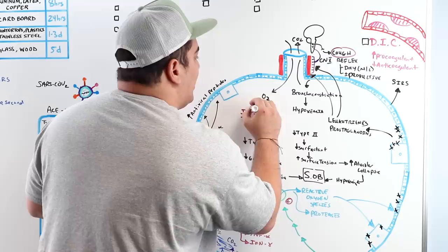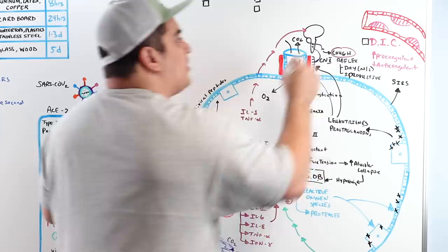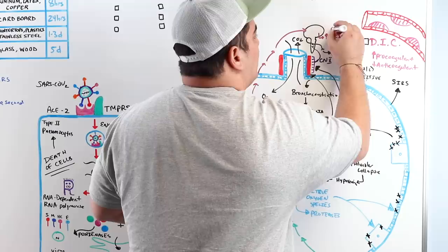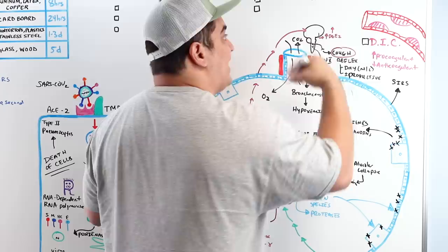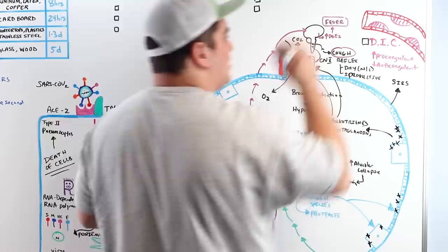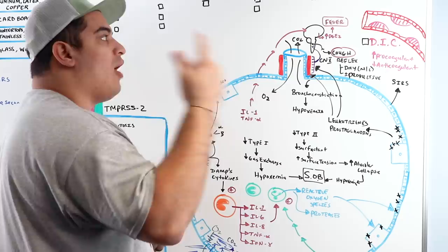IL-1 and TNF-alpha can also travel through the circulation to the hypothalamus in the CNS, increasing prostaglandin E2 production. This raises the body's thermostat, leading to fever — another key symptom. Key symptoms: hypoxemia causing shortness of breath, cough, and fever.